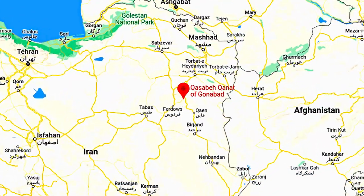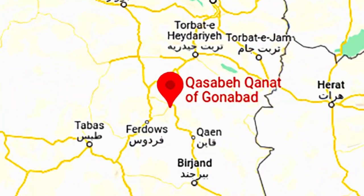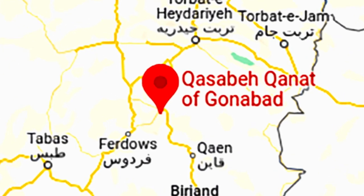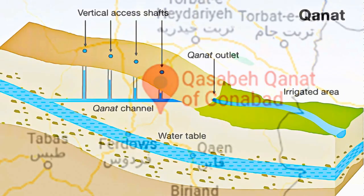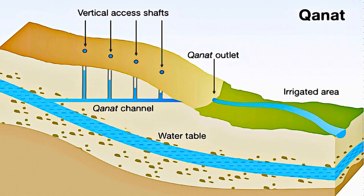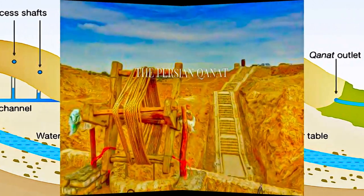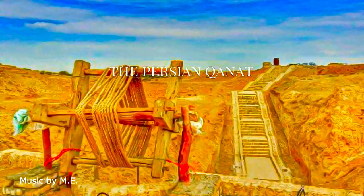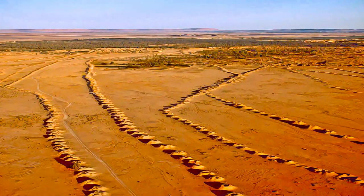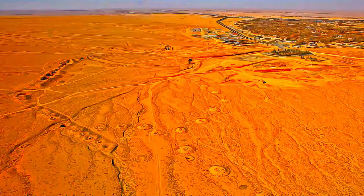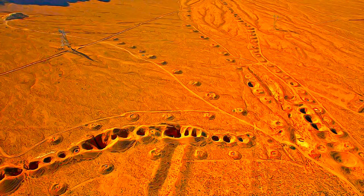Throughout the arid regions of Iran, agricultural and permanent settlements are supported by the ancient qanat system of tapping alluvial aquifers at the heads of valleys and conducting the water along underground tunnels by gravity, often over many kilometers.